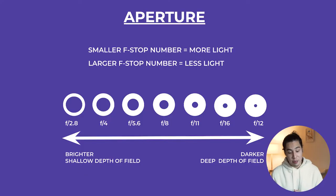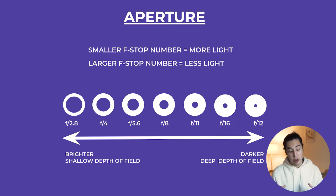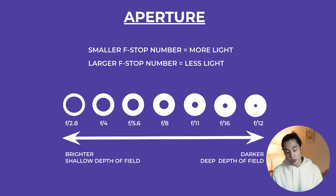A good practice to have before every shoot — photography and videography — is to have an aperture in mind, because then you'll play around with your shutter speed and ISO around that. To sum things up: smaller f-stop number means more light; larger f-stop number means less light. So f2.8 creates a brighter image and a shallower depth of field, while f12 on the other side of the scale gives a darker image and a deep depth of field.